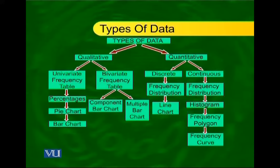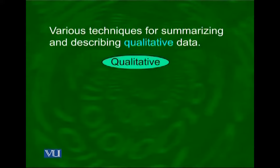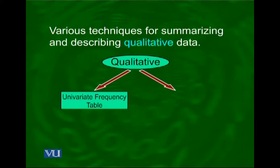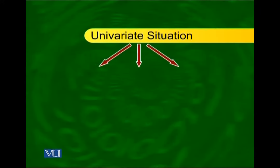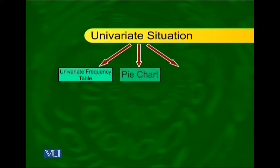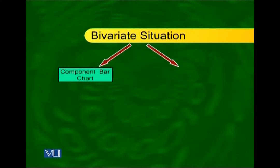As mentioned in the first lecture, there are two types of data: qualitative data and quantitative data. Today I will be picking up the qualitative category of data and discussing the various ways of representing qualitative data in case of a univariate situation as well as a bivariate situation. For the univariate situation, we will construct the frequency table, pie chart, and bar chart. For the bivariate frequency table, we will do the component bar chart and the multiple bar chart.